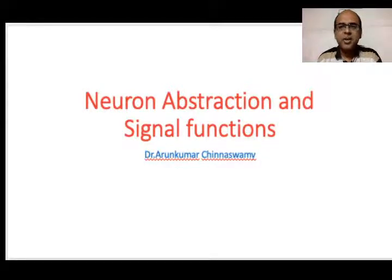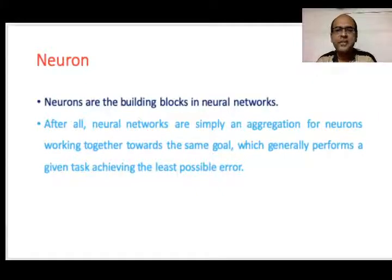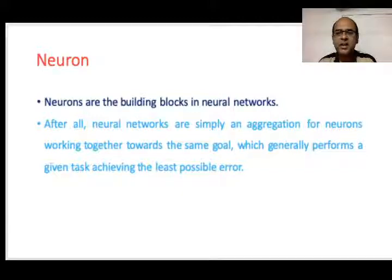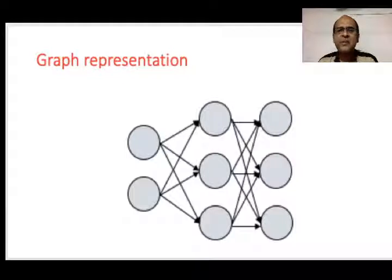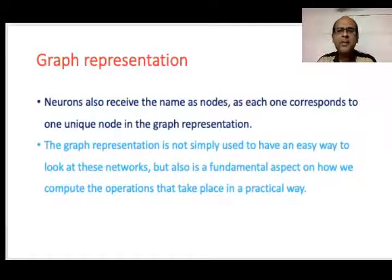Welcome to the lecture on neuron abstraction and signal functions. A neuron is considered to be the basic building block in the neural network. A neural network is an aggregation of neurons that work together towards the same goal, performing a given task with the least possible error. In the graphical representation of a neural network, you have the input layer, the hidden layer, and the output layer. The neurons are otherwise termed as nodes.